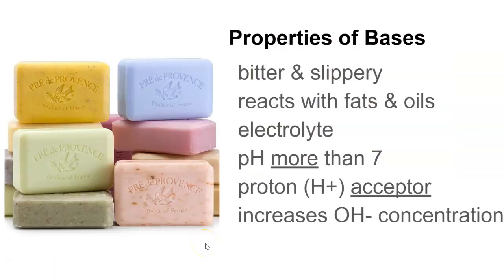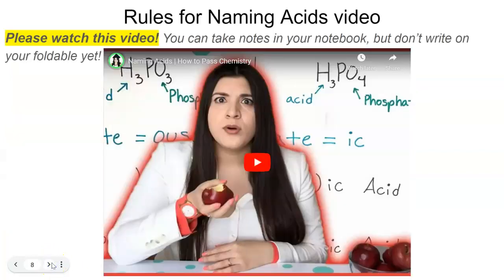Bases, they're bitter and slippery, so like soaps. They react with fats and oils, they're also electrolytes, and they have a pH greater than 7. These bases are proton acceptors, and they increase the hydroxide concentration in solution, so that OH anion is going to increase. So acids have more hydrogen plus, bases have more OH minus.